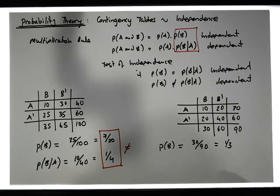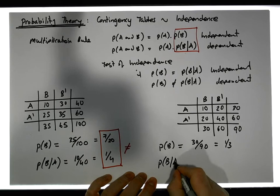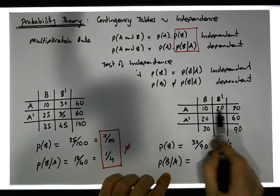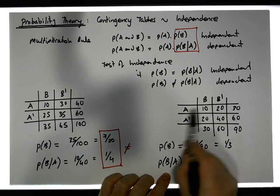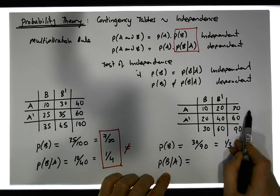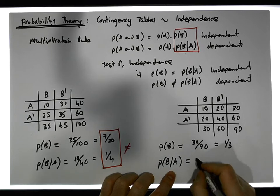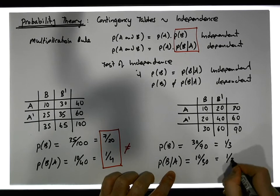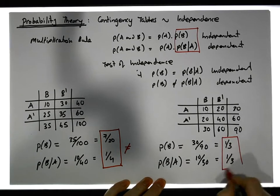Now let's calculate the probability of B knowing that A has happened. We know that A has happened, so we're on this row here — the A row. What are the chances of selecting B knowing that A has happened? There are 10 chances out of 30, so we have 10 out of 30, which is the same as one in three.